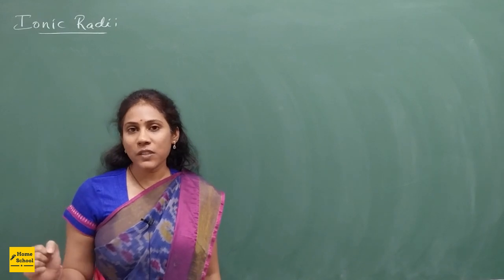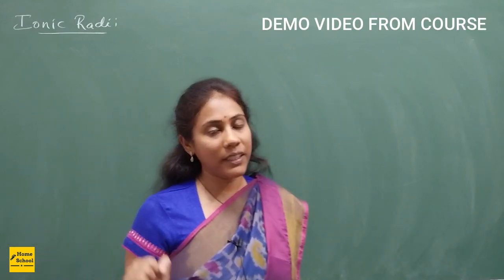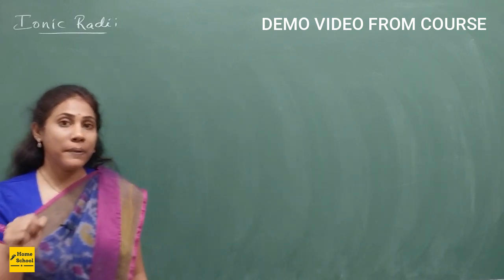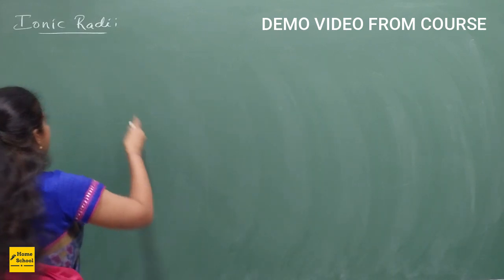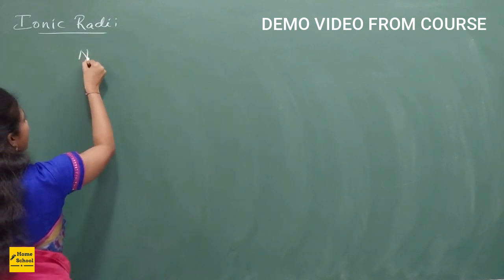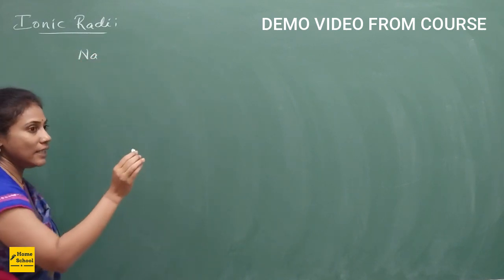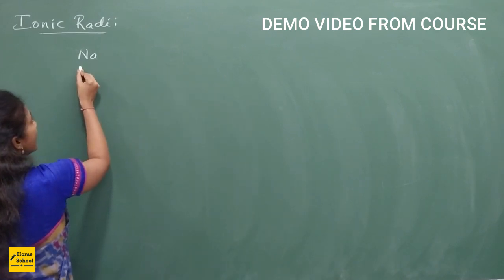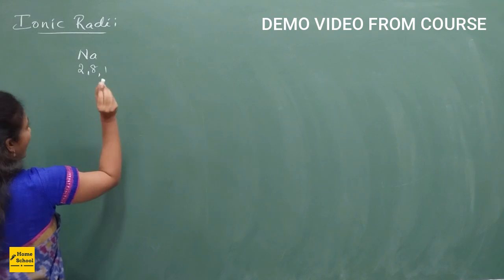In this video, let us discuss everything about ionic radii. First, let us understand the basic aspect of formation of an ion. Any metal you take, for example sodium — any metal has a tendency to lose electrons. So sodium has got the electronic configuration 2, 8, 1.